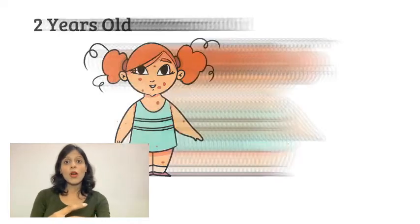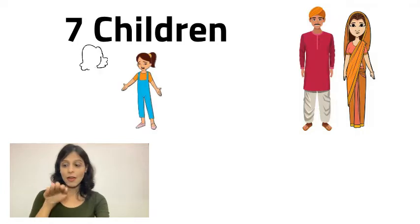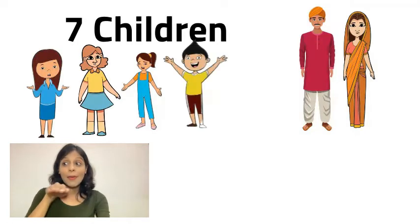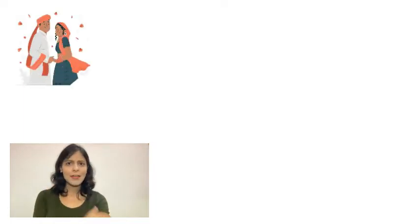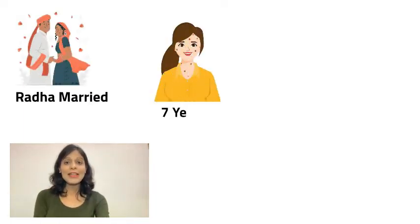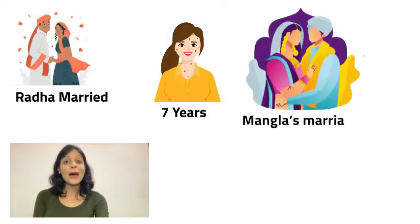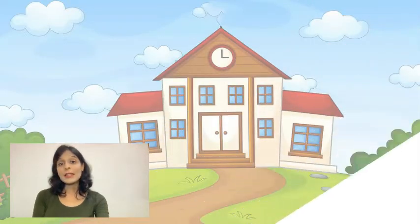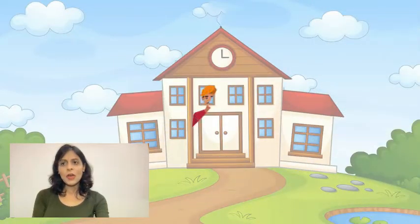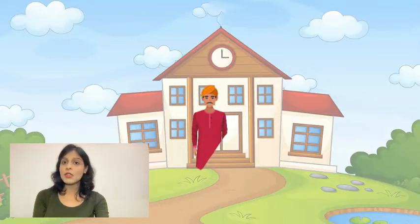Ramlal had seven children — Bholy had three brothers and three sisters and she was the youngest. Her brothers were sent to school and college, but girls were not. Her eldest sister Radha was already married, and when Bholy was seven, her other elder sister Mangla got married. Now it was Champa, the third daughter's, turn. A primary school for girls was inaugurated in the village, but none of her other sisters were sent to school.